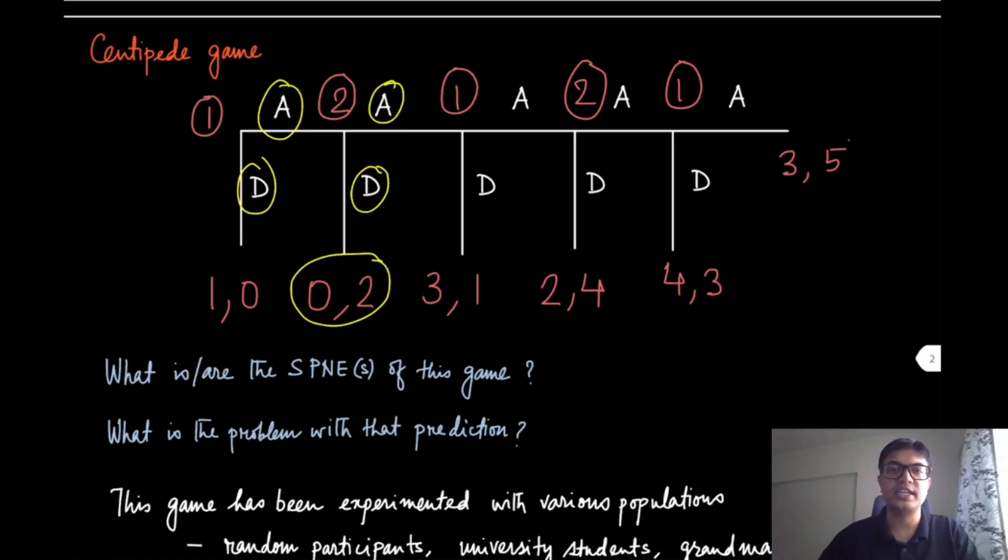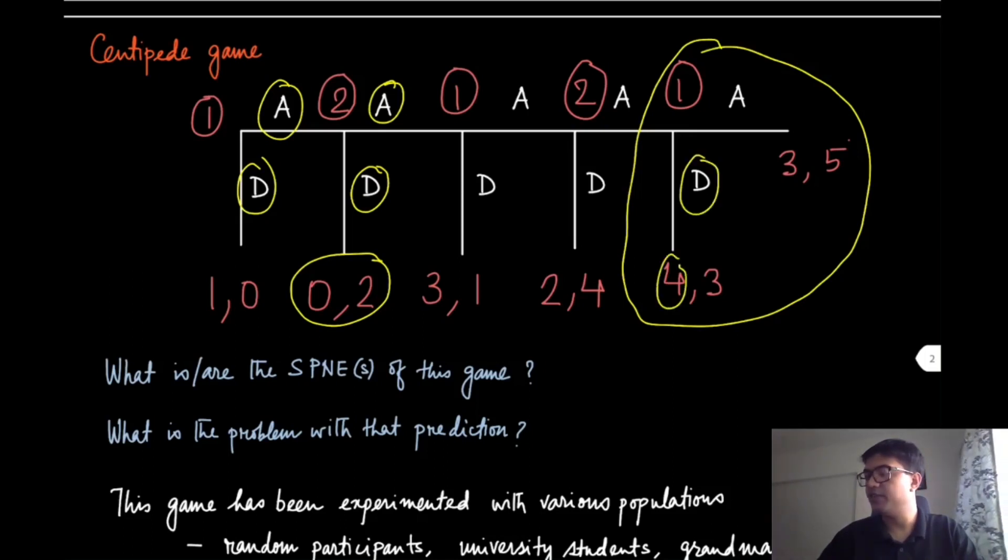Let's look at five stages of this centipede game. What is the subgame perfect Nash equilibrium? If you use backward induction, at this node you try to find the pure strategy Nash equilibrium for player one. You can see that this number is larger, so playing down is a better response. If you go back one step and ask what player two should play, it knows if it plays across, player one will play down and it will get a utility of three, while if it plays down, it gets a utility of four. You can continue this, and you will see that for all the players, playing down is the best response. So the subgame perfect Nash equilibrium is the case where all the players are playing down.